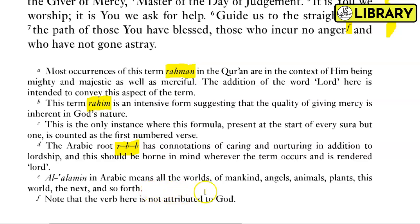Notably, the verb in 'those who incur anger and who have not gone astray' is not attributed to God. This is very significant — God wants to love them, but they did it themselves. They have done things to make someone angry and went astray on their own. God had no intention of making them go astray. That would be it for this chapter — see you in the next video.